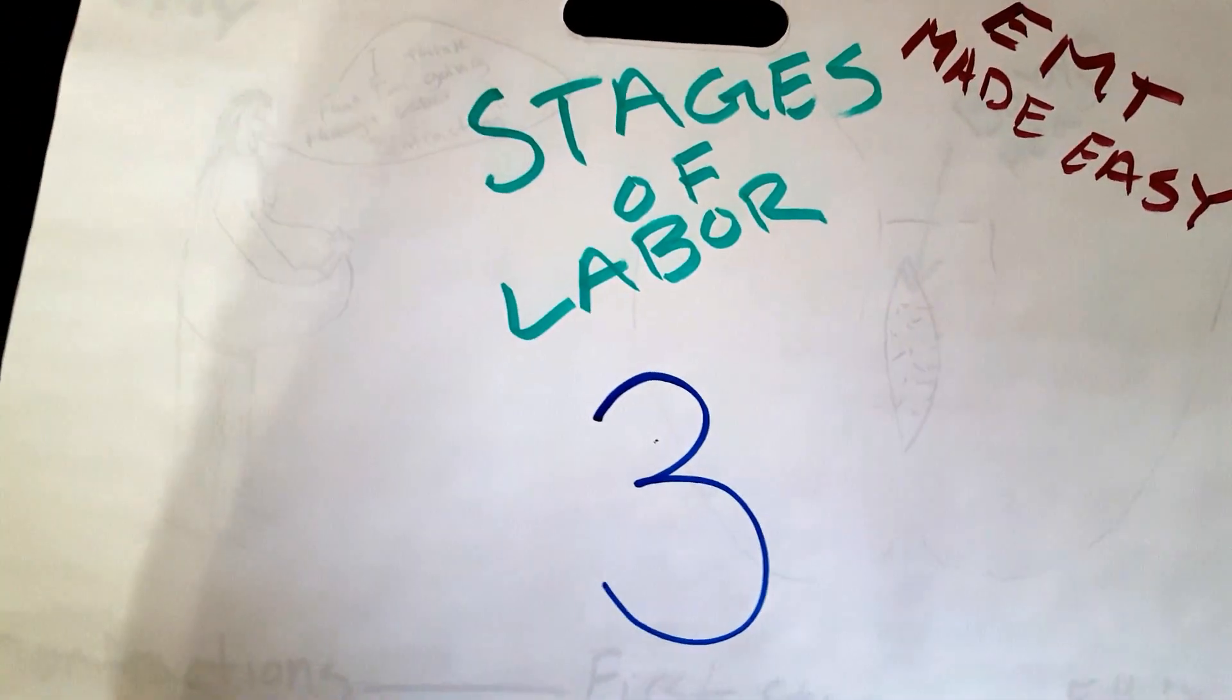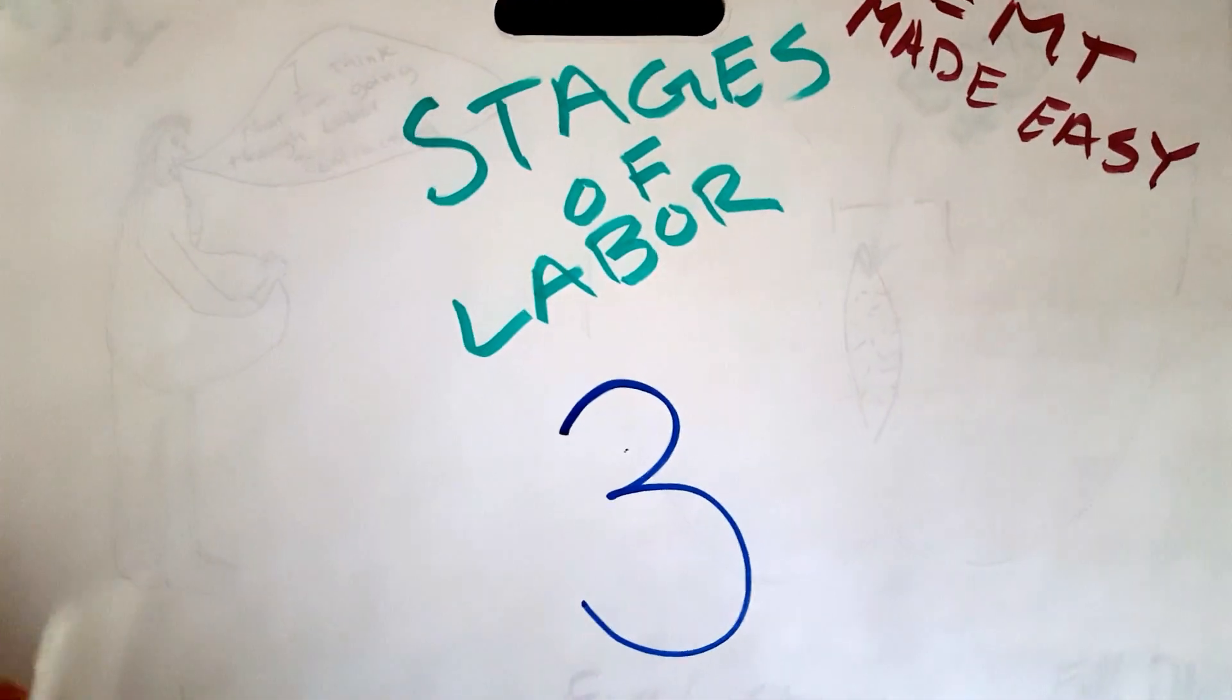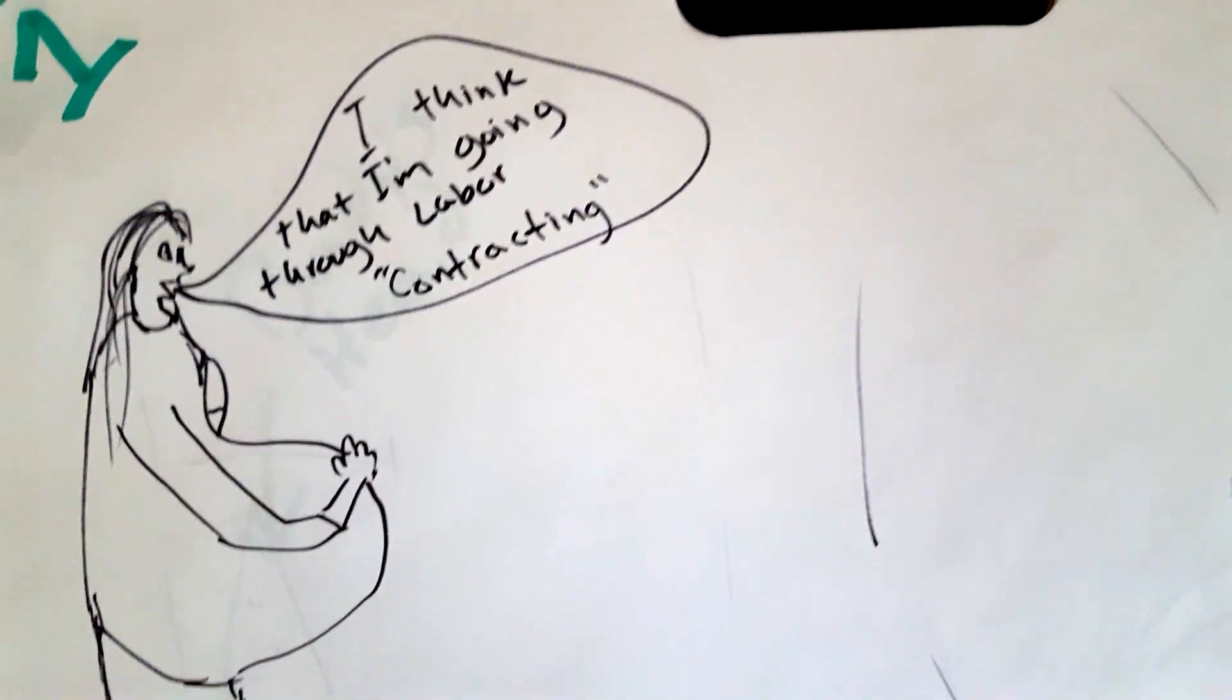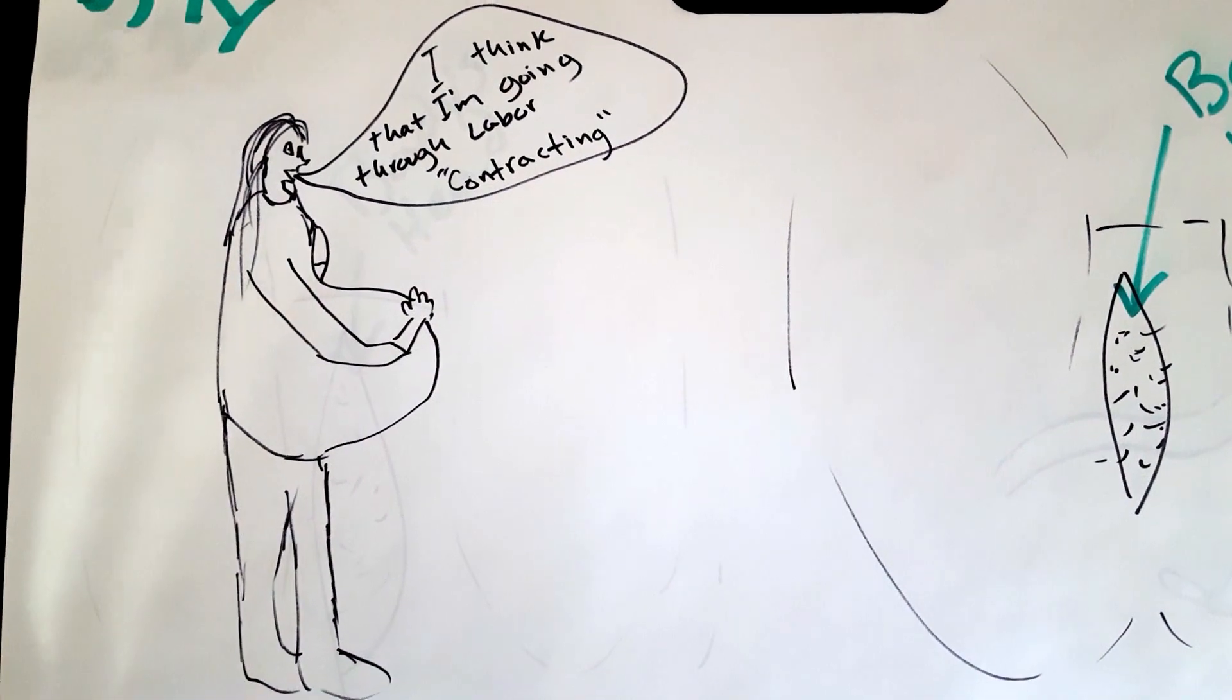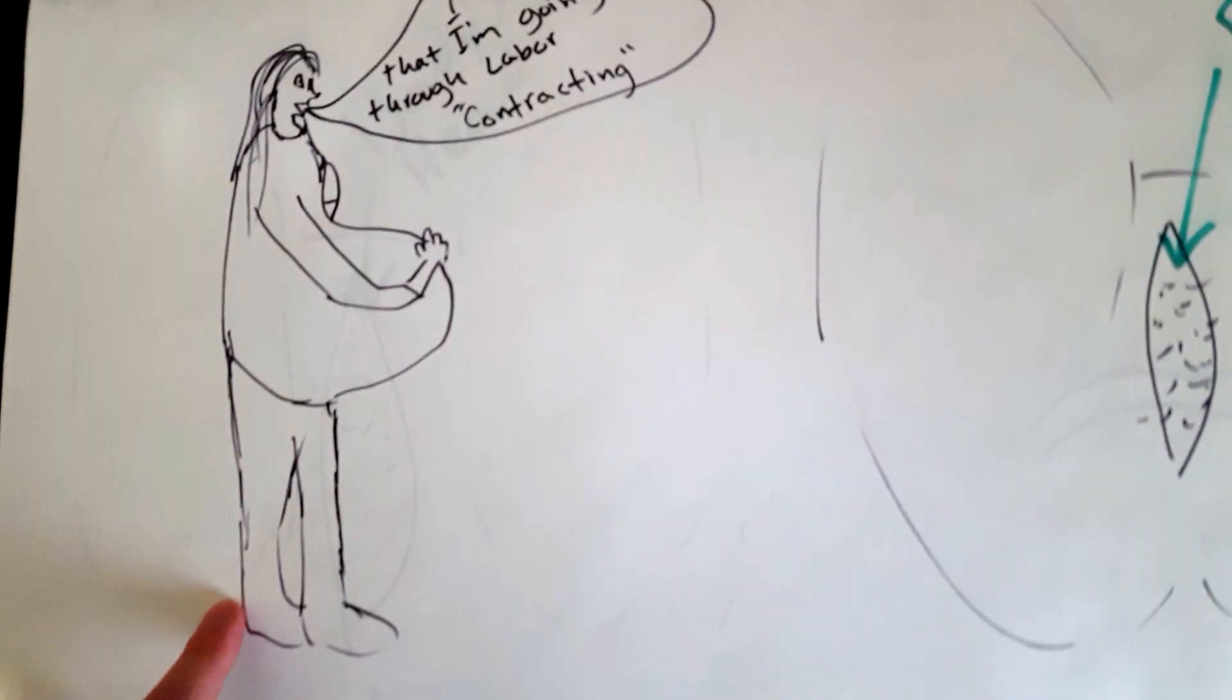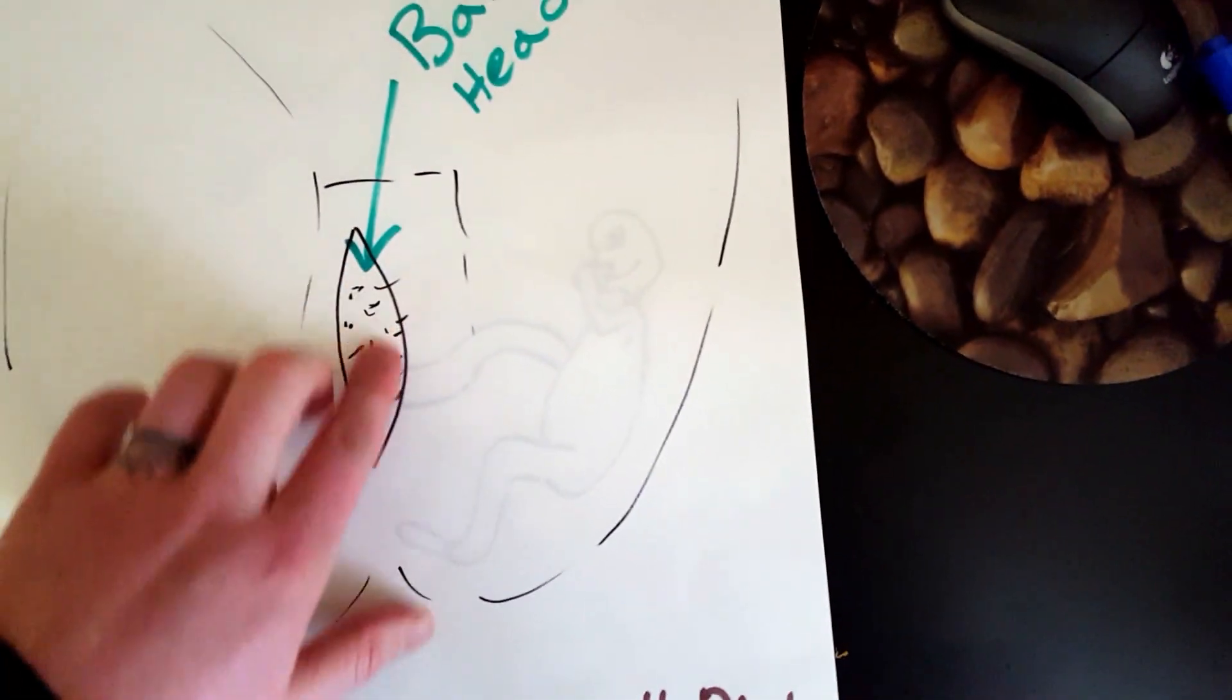The first stage, stage one, happens when the lady starts going through labor. She feels 'I'm going through labor'—that's when she starts contracting. So from contraction to... this right here is supposed to be a vagina and this is the head of the baby, so it's crowning right now.